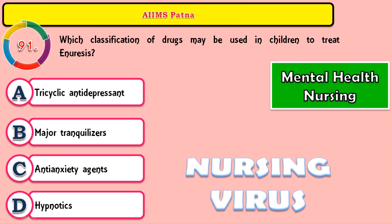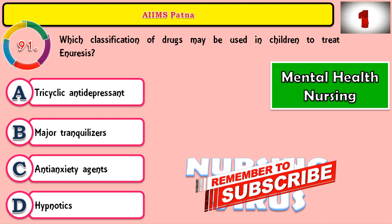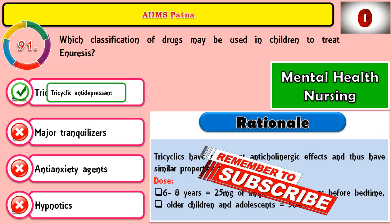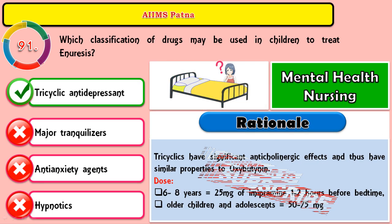Question 91: Which classification of drugs may be used in children to treat enuresis? The correct answer is tricyclic antidepressants, as already discussed in the previous question. An example is imipramine under the TCA group.